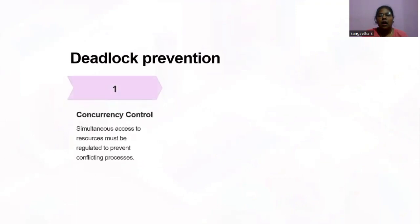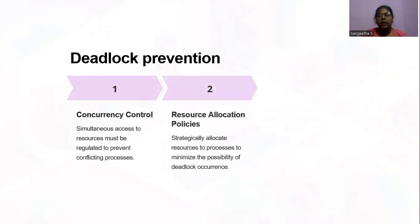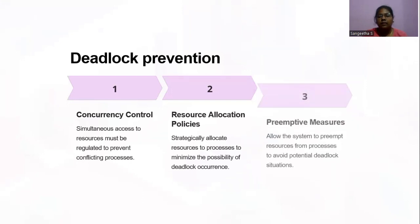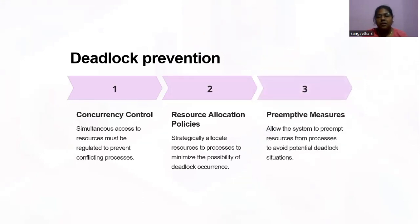Deadlock prevention — how can we prevent deadlocks? The first one is concurrency control: simultaneous access to resources must be regulated to prevent conflicting processes. Resource allocation policies: strategically allocate resources to processes to minimize the possibility of deadlock occurrences. Preemptive measures: allow the system to preempt resources from processes to avoid potential deadlock situations.